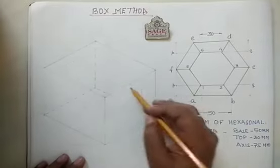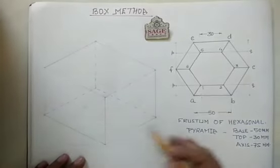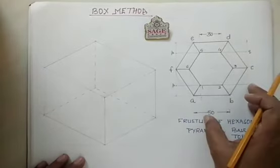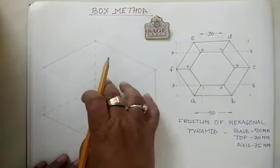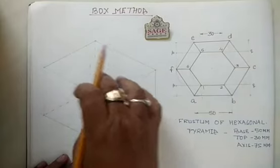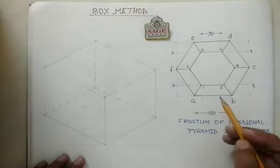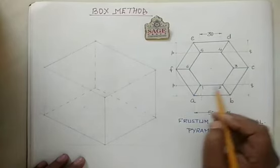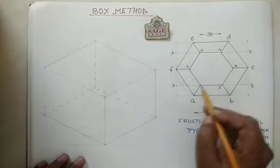Using the three axes, I complete the full cuboid. The frustum of the hexagonal pyramid can now be bounded inside this cuboid.